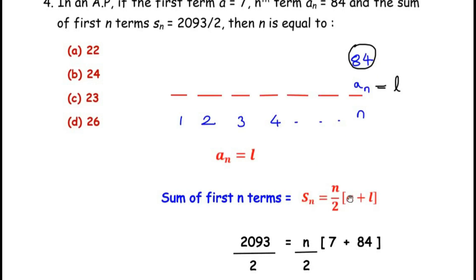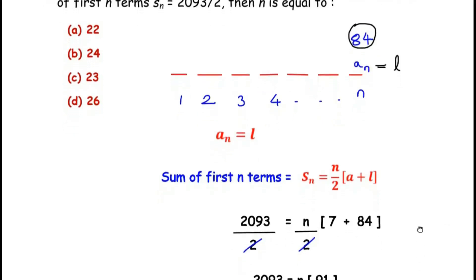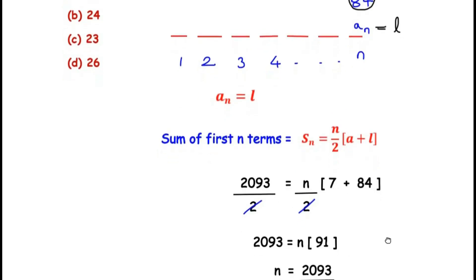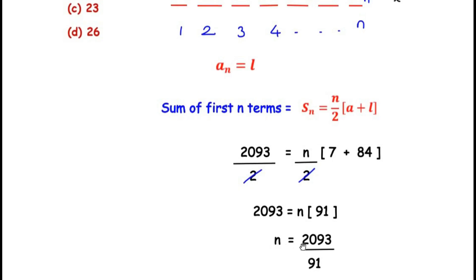Let us simplify this further. The 2 from the left hand side divides the 2 from the right hand side, so this simplifies as 2093 on the left hand side equals n times (7 plus 84), which gives us 91. Taking 91 on the other side of the equal sign, we get n equals 2093 over 91.